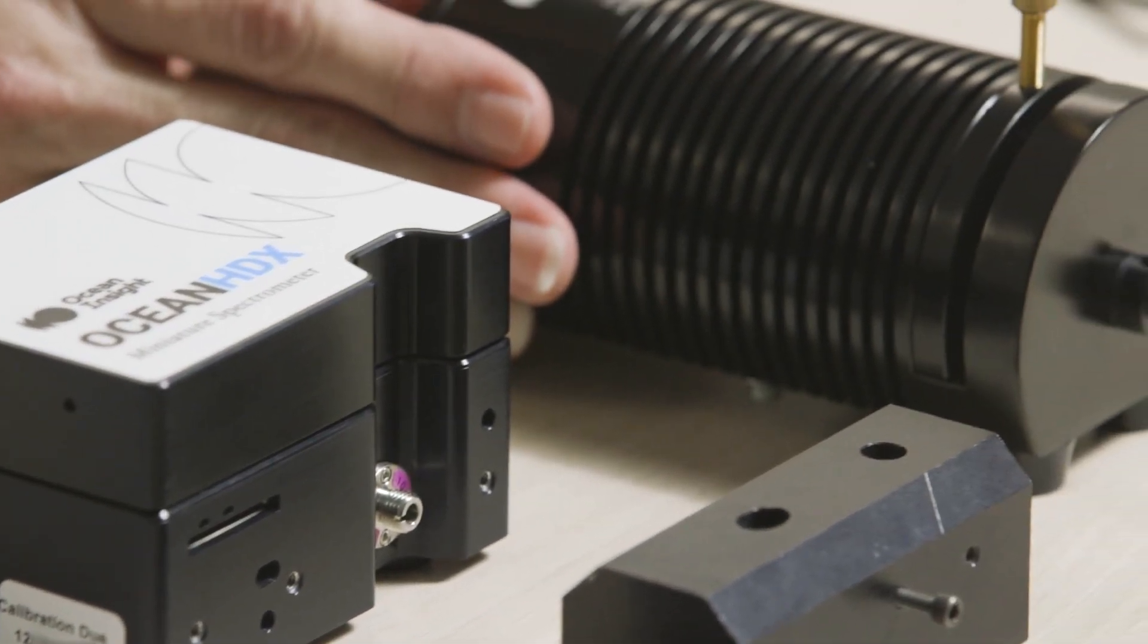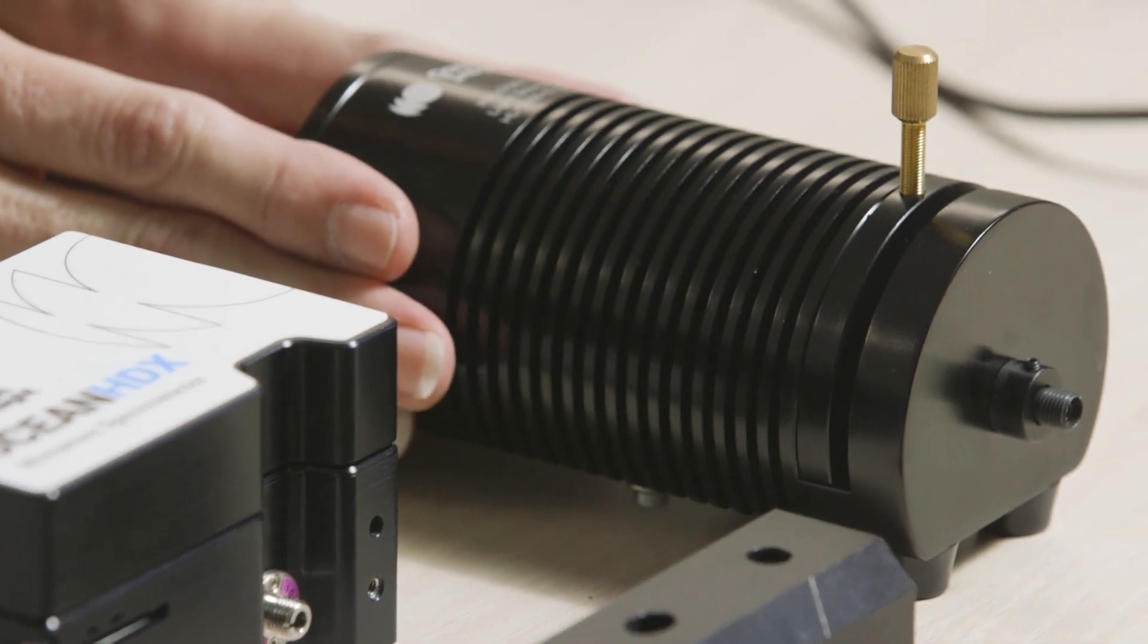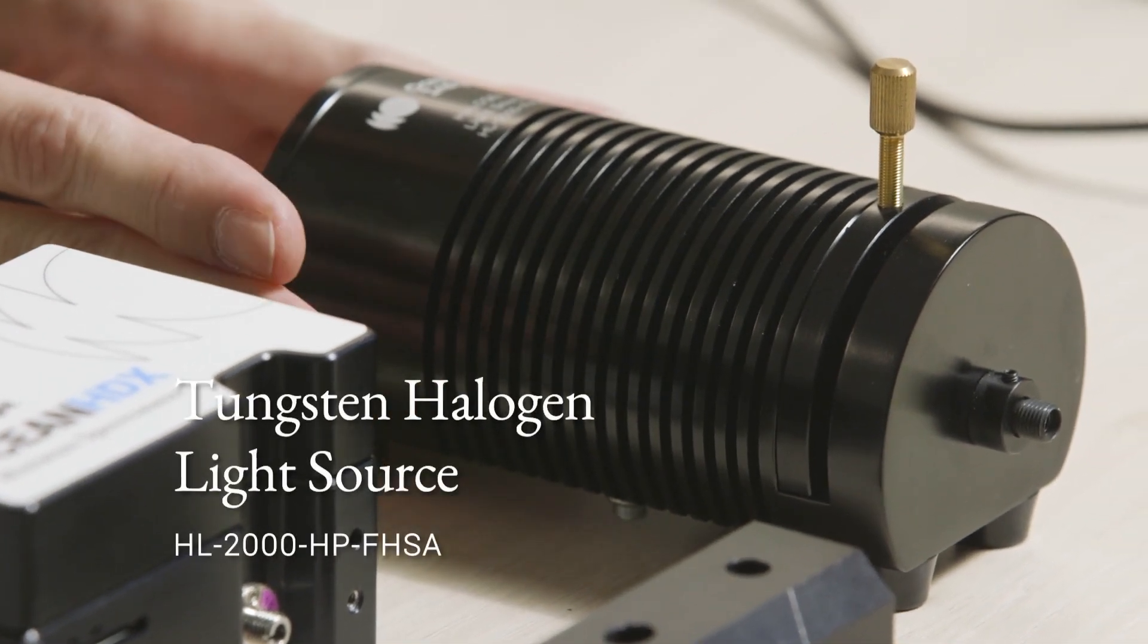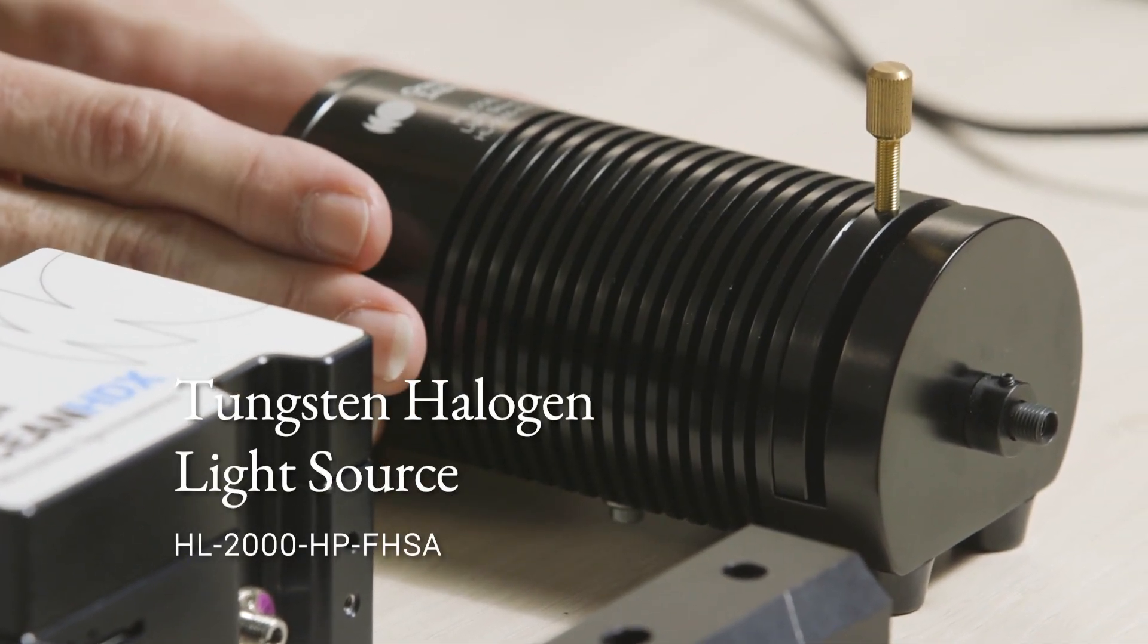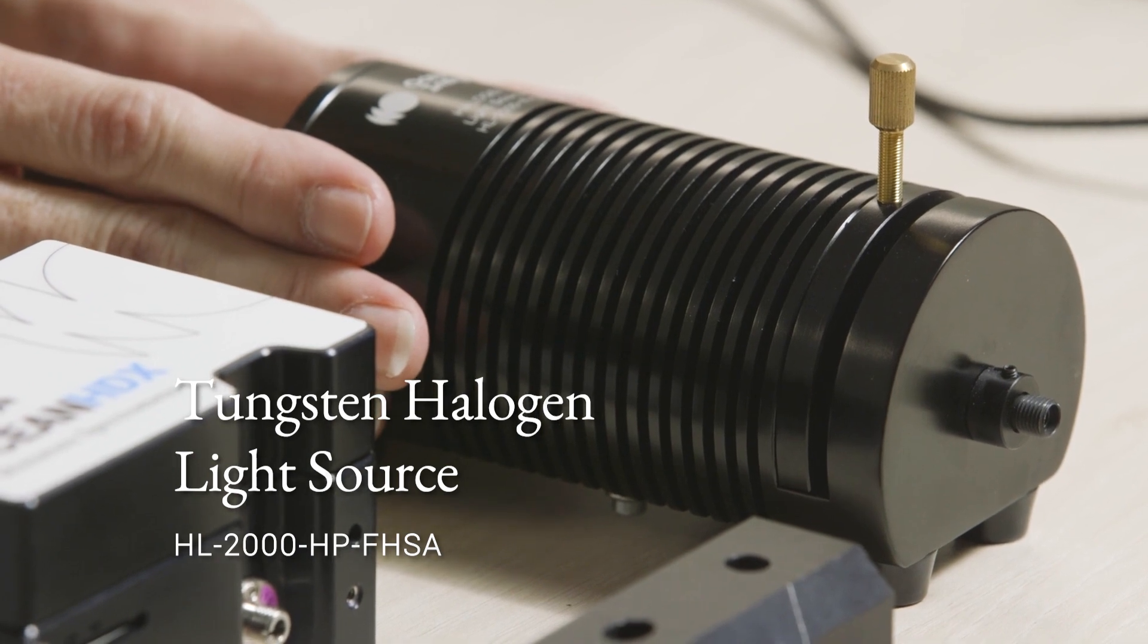We're also using one of our tungsten halogen light sources, the HL2000. This is perfect for those color measurements with lots of energy in the visible and NIR wavelength region.